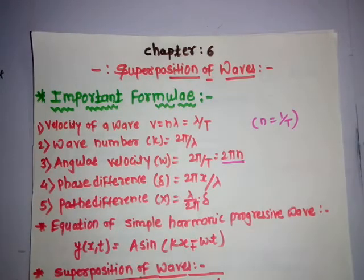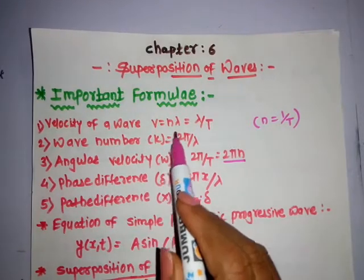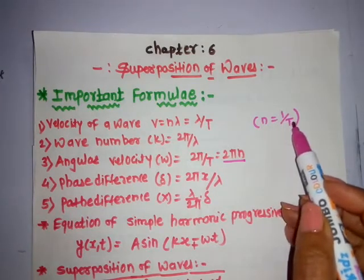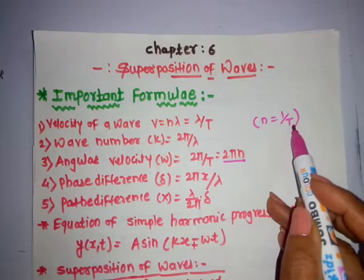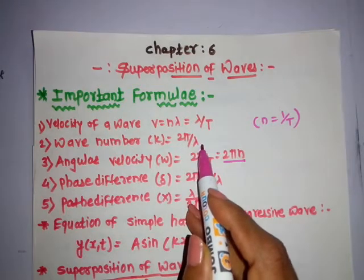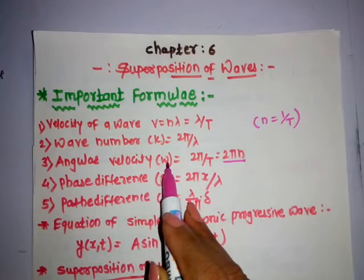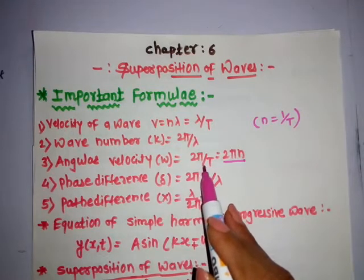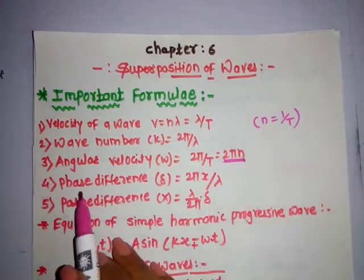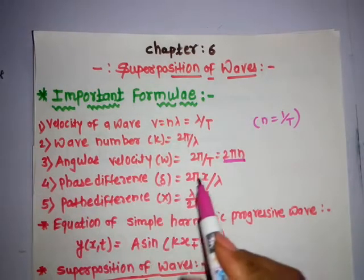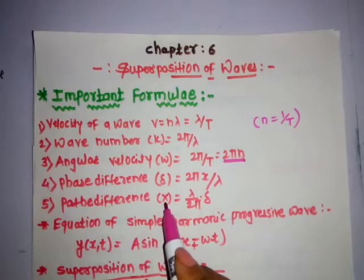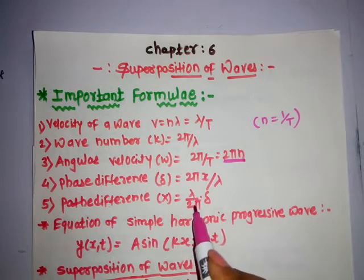The first formula is the velocity of a wave: V = nλ. This can also be written as λ/T because n = 1/T, where n is the frequency and T is the periodic time. The second formula is wave number, represented by k = 2π/λ. Third is angular velocity, denoted by ω = 2π/T, which can be written as 2πn. The next formula is phase difference, denoted by δ = 2πx/λ.